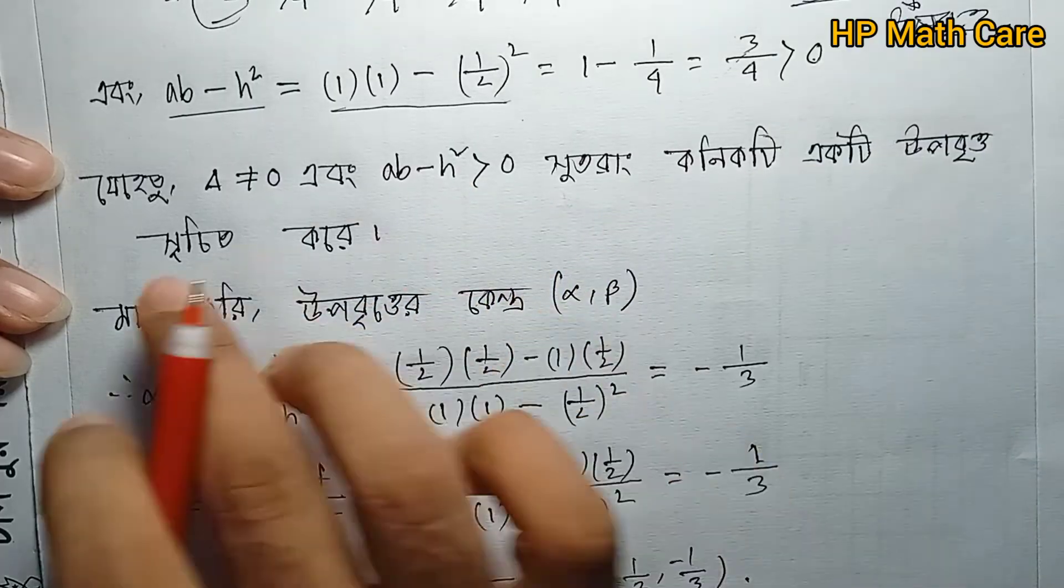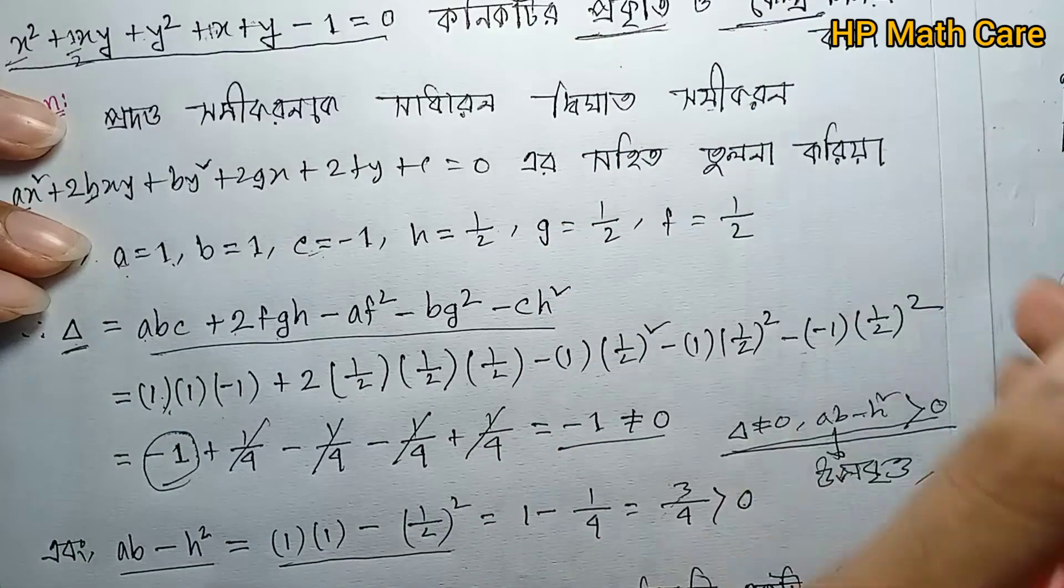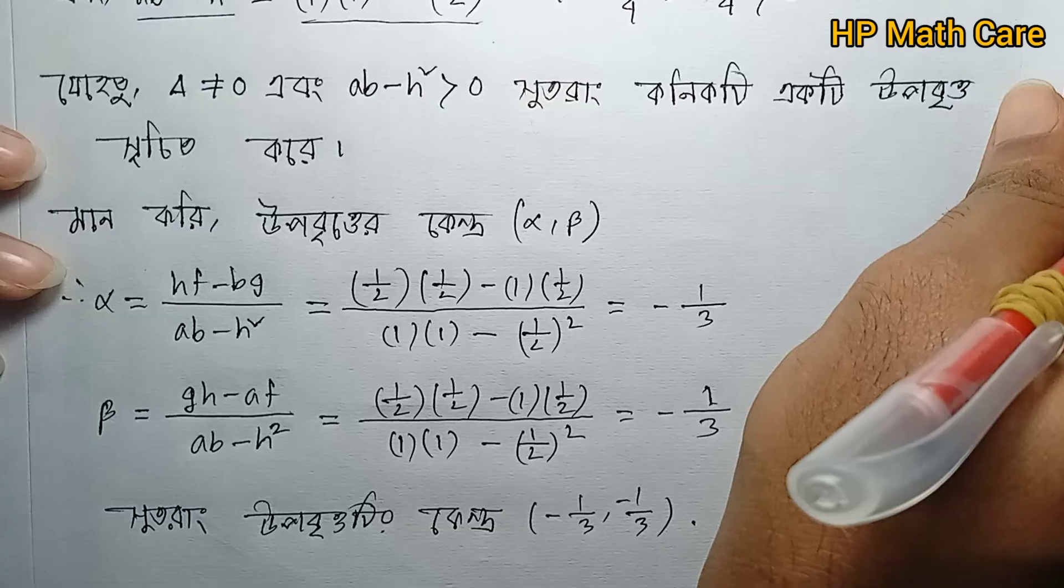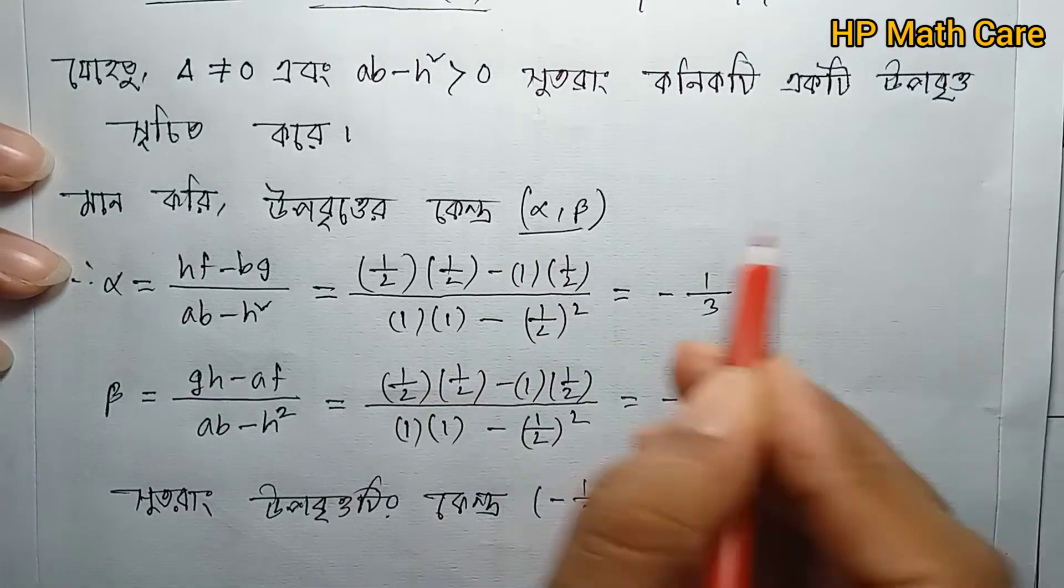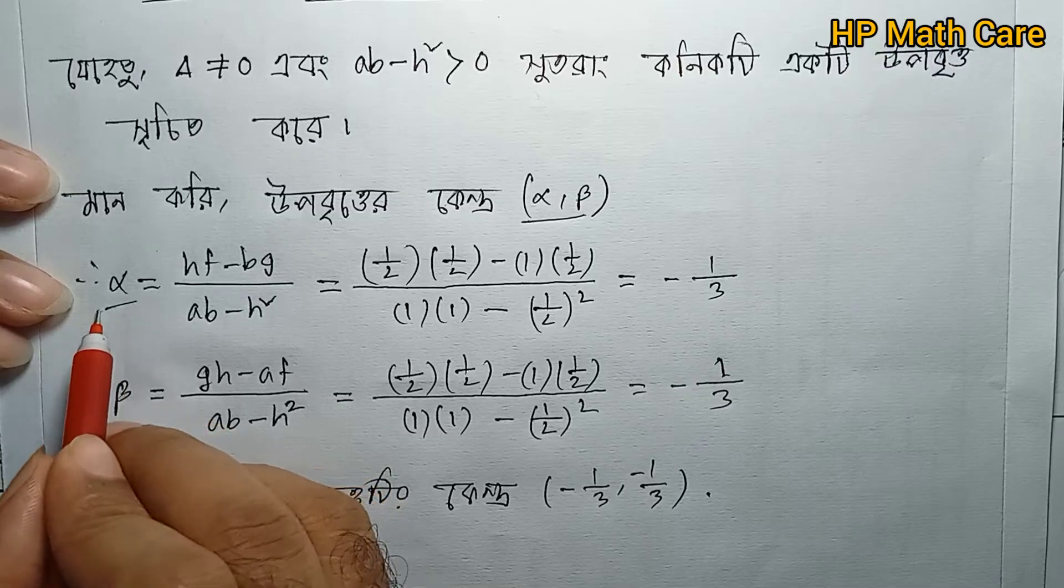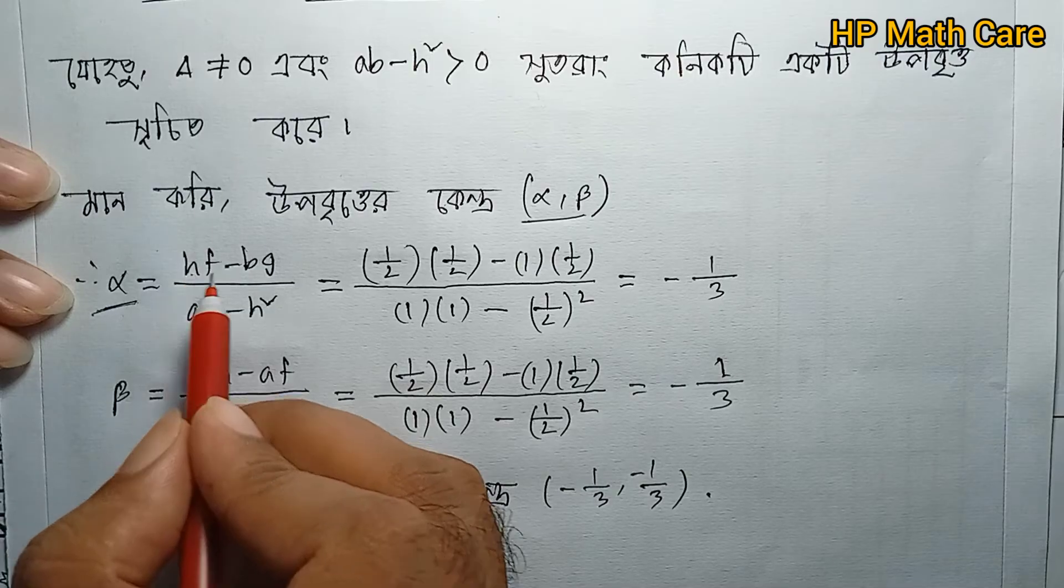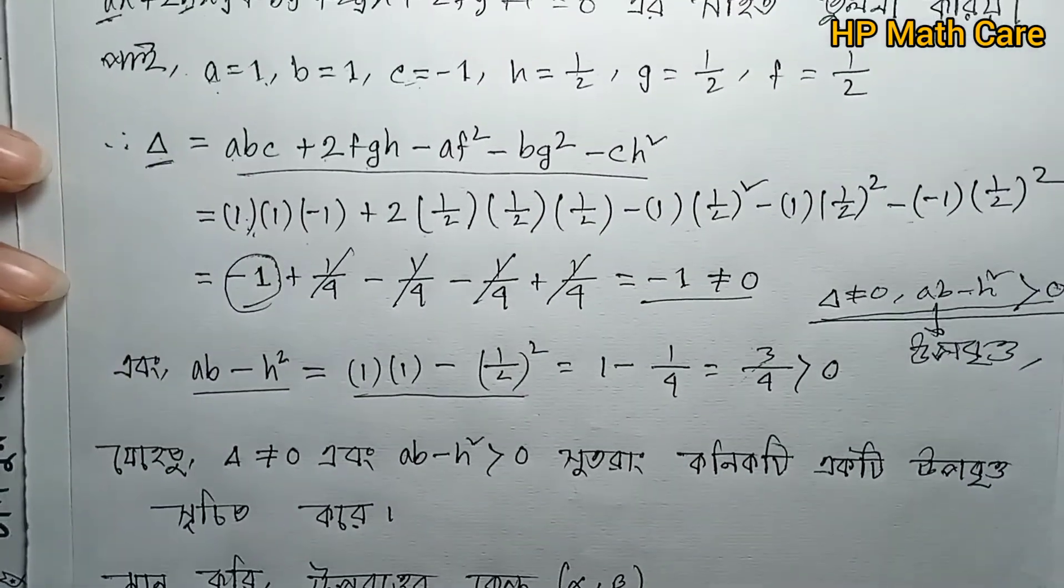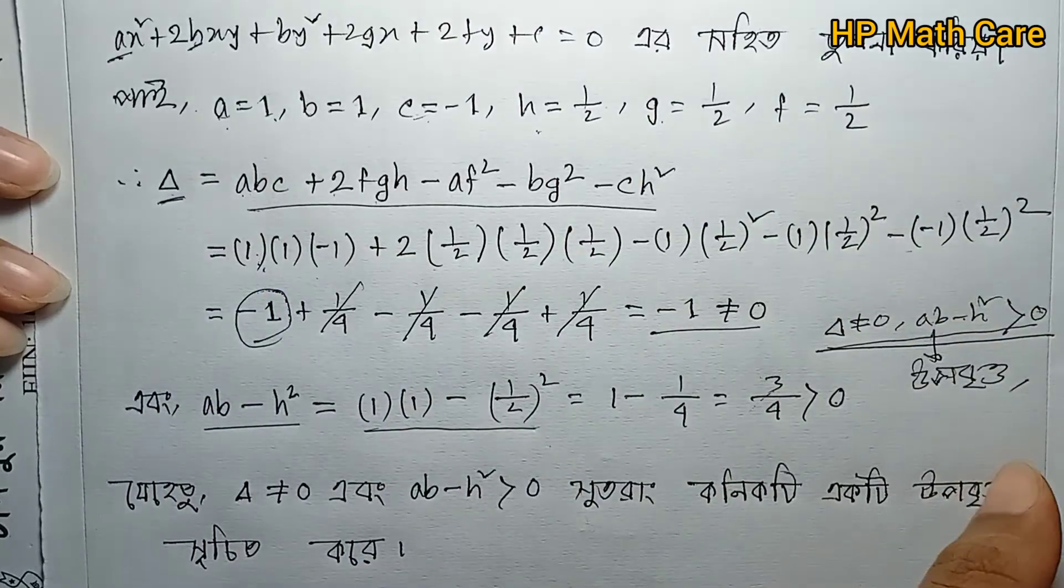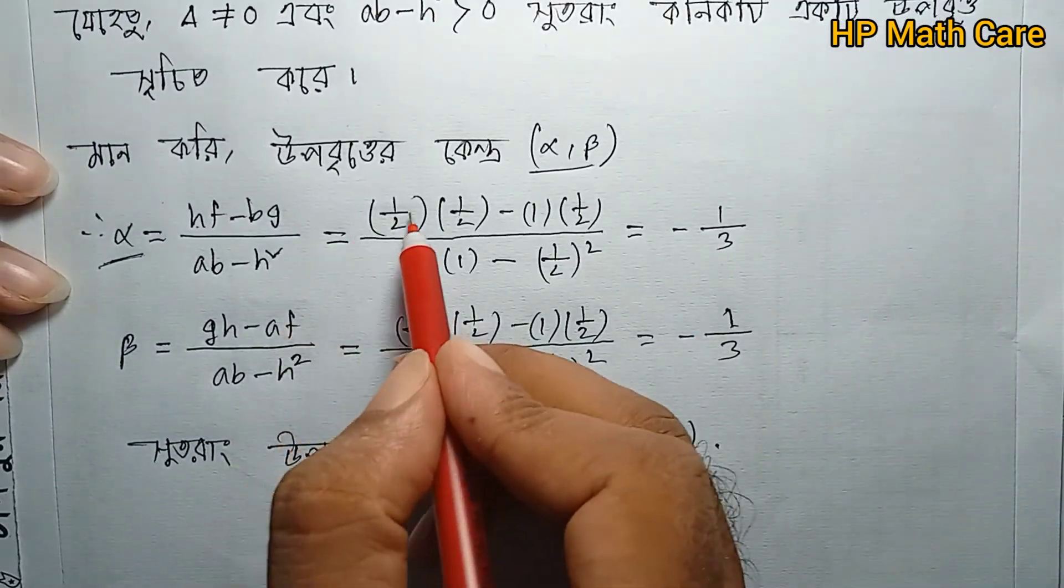Since delta ≠ 0 and ab - h² > 0, this is an ellipse with a center. We need to find the center coordinates using the formulas.